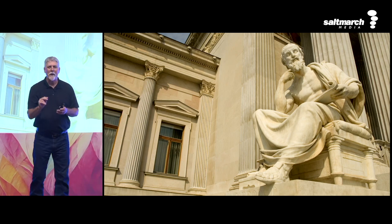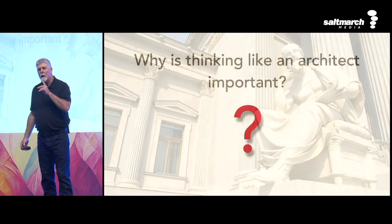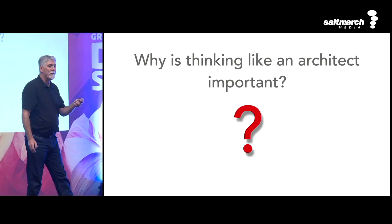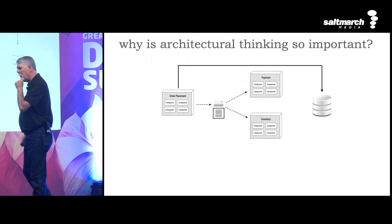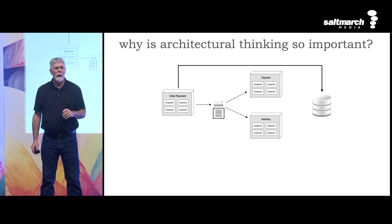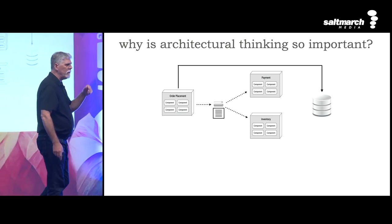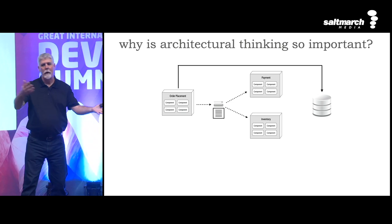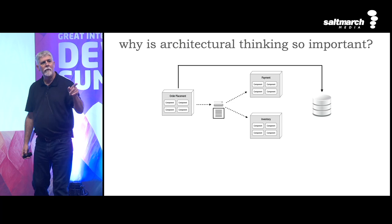That's what I want to show you about architectural thinking — what does it mean to think like an architect, to see a problem with an architect's eye, an architect's point of view. I first want to show you why thinking like an architect is important, regardless of your role. Let's say we're in a situation where we're doing some messaging or event-driven architecture. On the far right-hand side is an order placement service, and it's going to send a message to payment and inventory. Once I place an order, I have to pay for it, and we have to decrement inventory, and we have a database. So you have a choice to make as a developer.